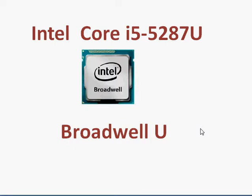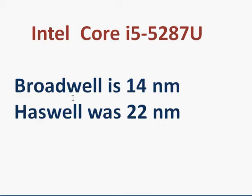Let's take a look at the Intel Core i5-5287U, a Broadwell processor that released in January 2015. Broadwell is a successor to the Haswell processor but has an improved manufacturing process. While Haswell was a 22nm process, Broadwell is a 14nm process.